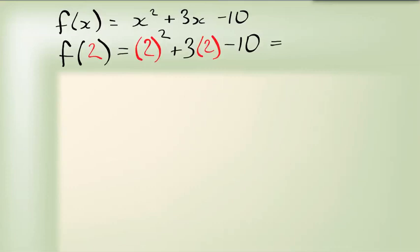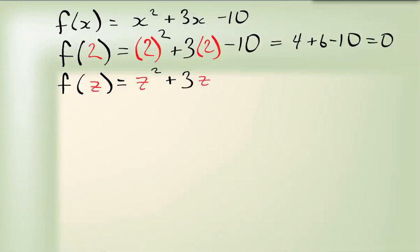From here, we can go on to get our answer. It ends up being 4 plus 6 minus 10, which is 0. And that would work for any variable. I can also put in f of z. Now this becomes, anywhere where there is an x, I swap out and put a z. z squared plus 3z minus 10.